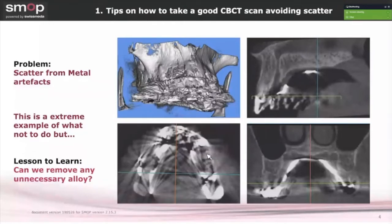Whether it's bonded retainers or metal alloys, removing them to avoid scatter — even if it takes a little more time — increases the accuracy and predictability of our guided surgery. After planning hundreds or thousands of cases, I believe this is definitely a good protocol. Metal artifact scatter is one unspoken pitfall that many companies never mention, and avoiding or reducing it is always going to be beneficial.